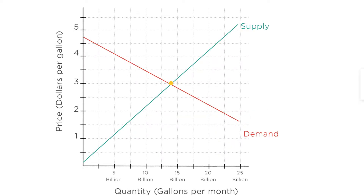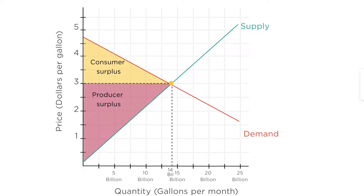This graph shows an equilibrium price of $3 a gallon and an equilibrium quantity of 14 billion gallons a month. And it shows the consumer surplus here and the producer surplus here.